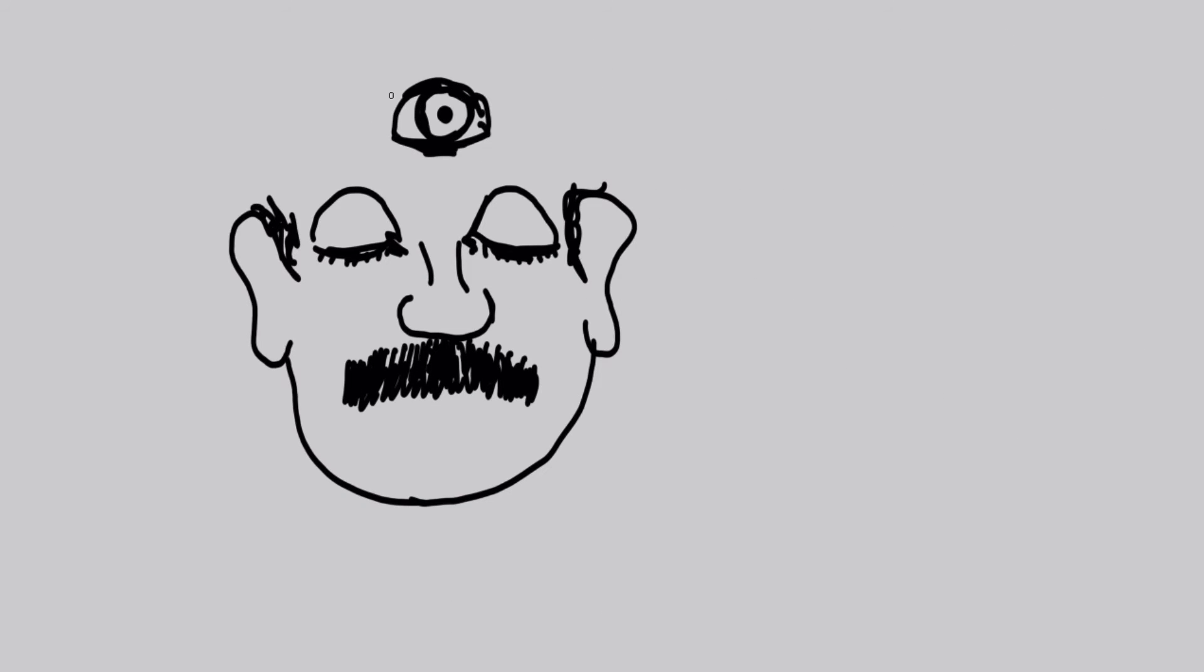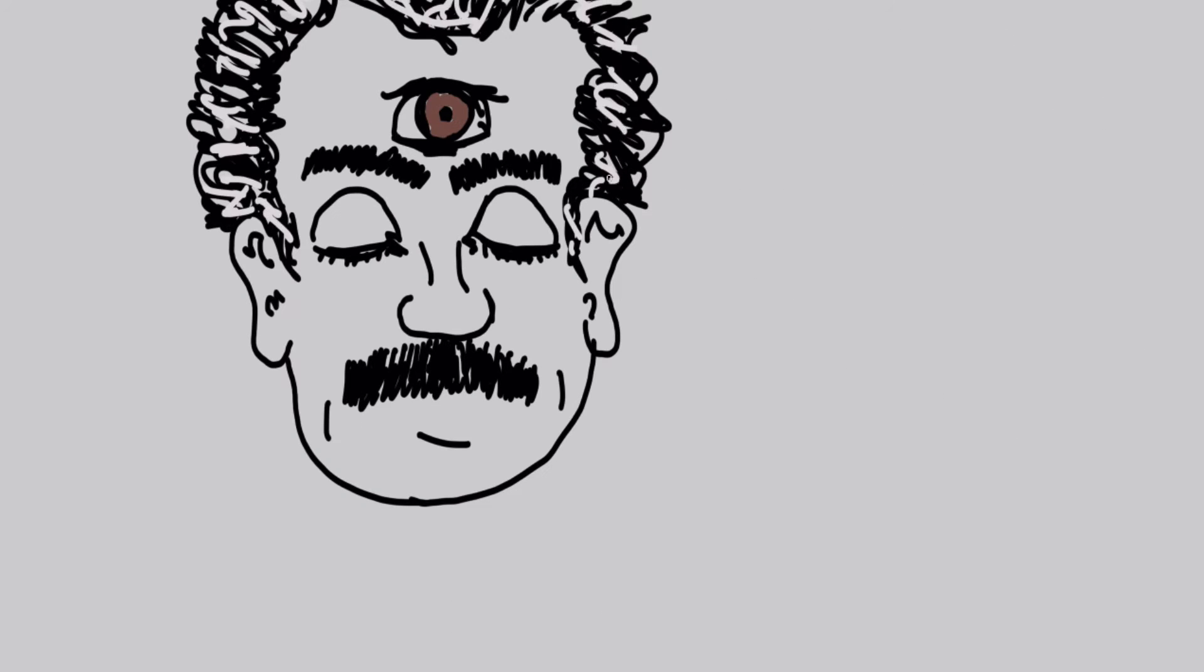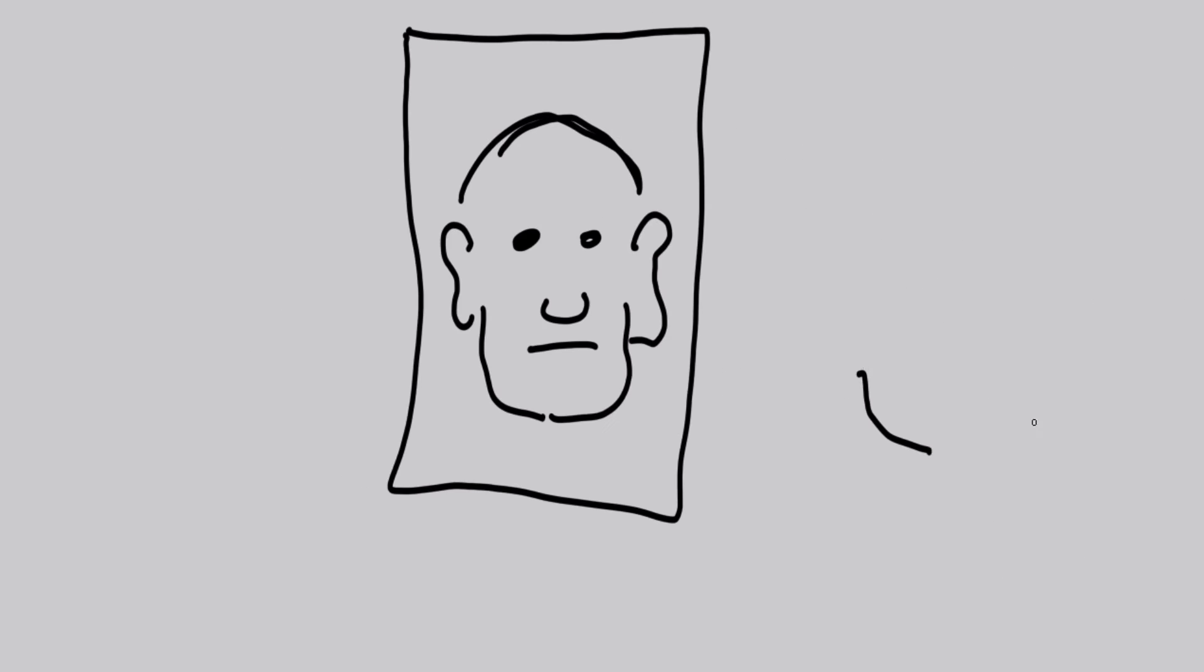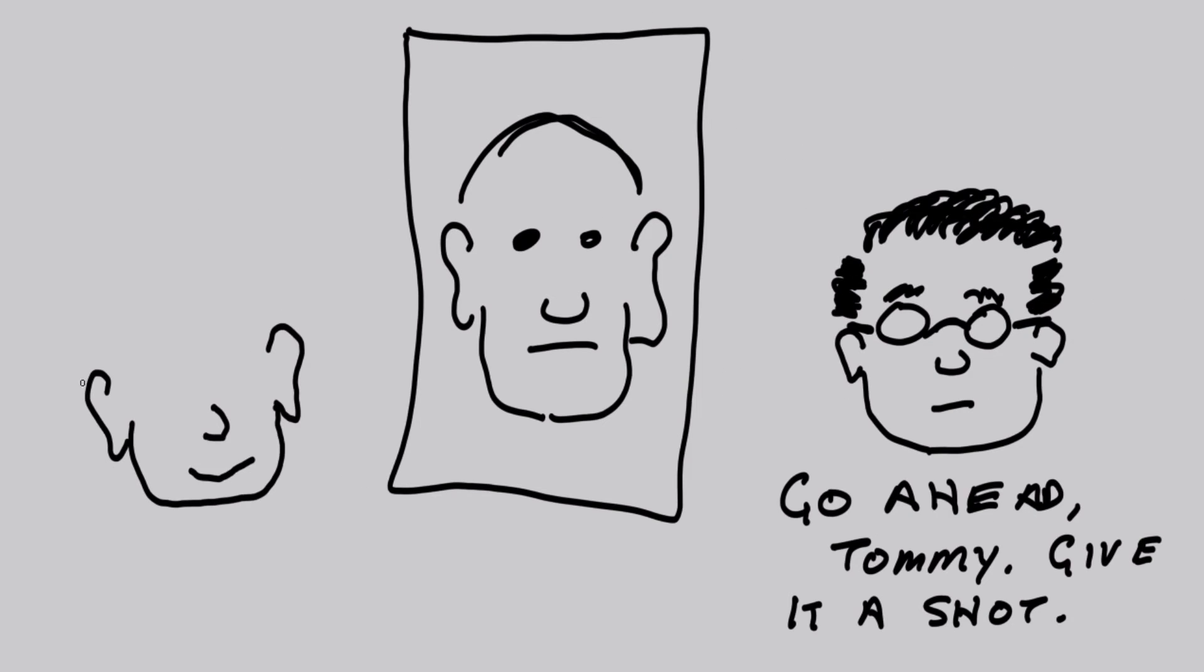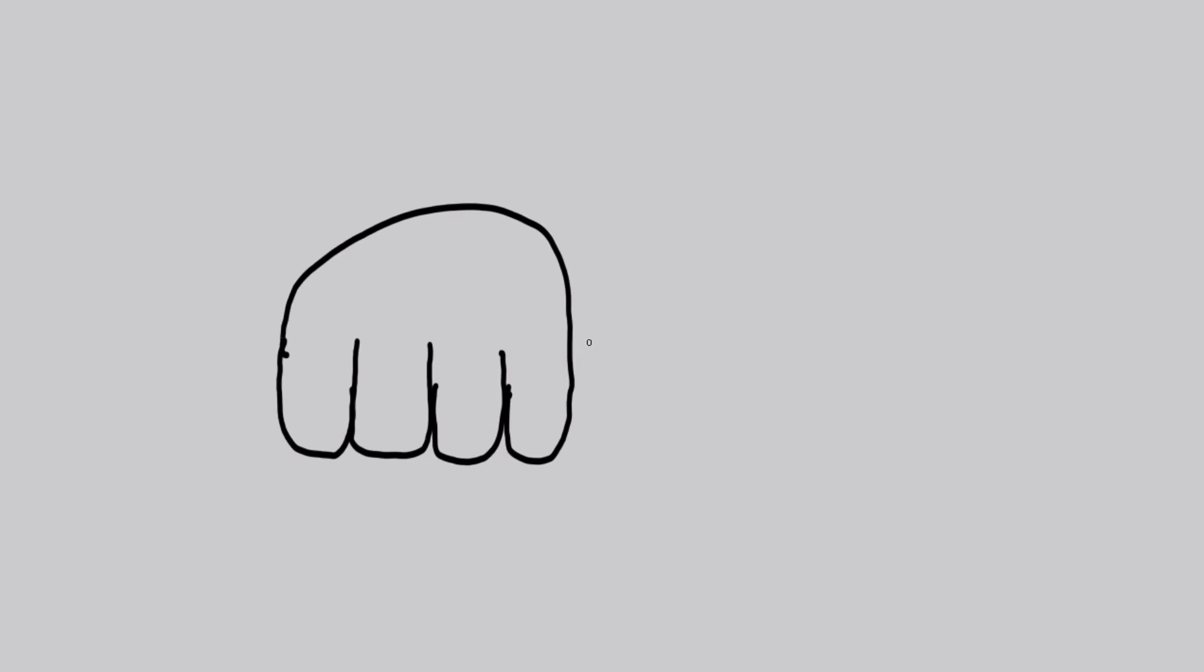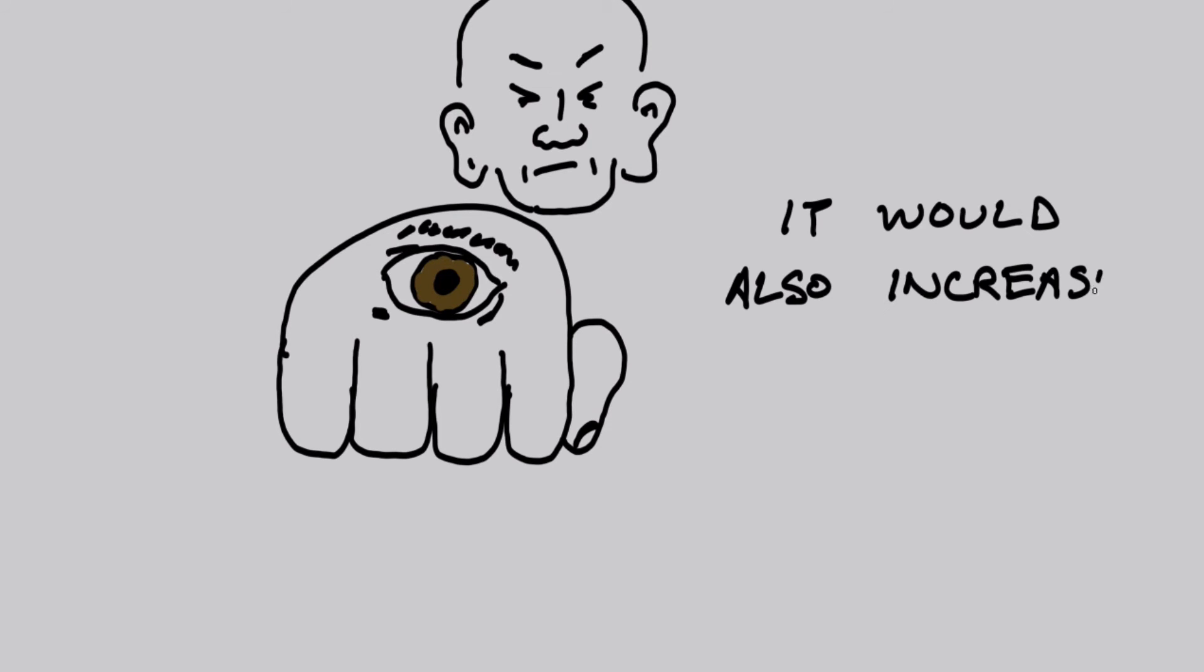Of the tests Piaget devised to test this stage, the third eye problem is among the most interesting. Children were asked where they would place a third eye on a human, and then asked why. Experiments showed the development of more creative thinking when older children placed the extra eye on a hand, stating that a person would be able to see above and around objects.